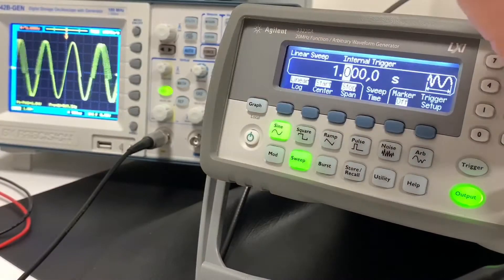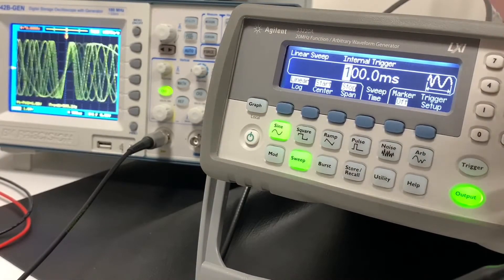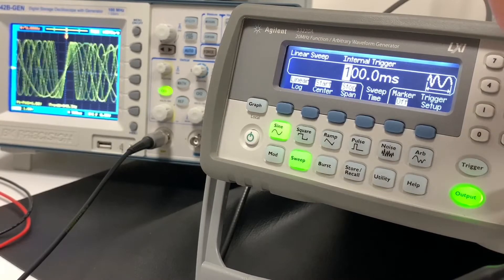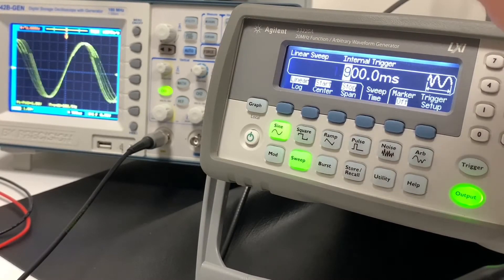I can change the sweep time. So I can, for example, make it really fast. So that's a little bit too fast to see. And then make it even slower than that.